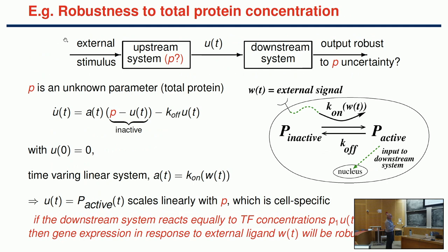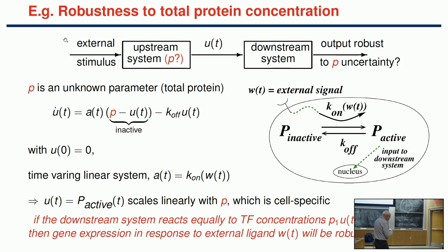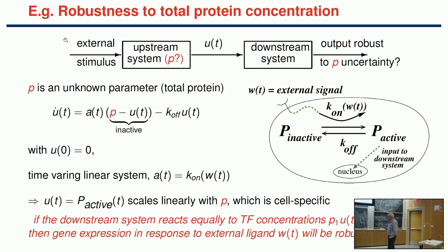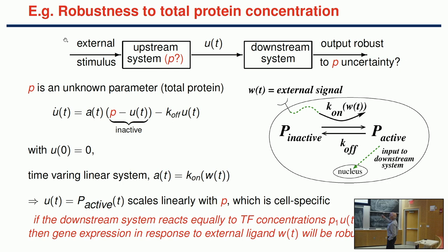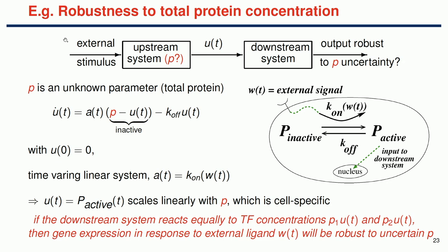Why is this relevant in biology? Suppose you have a system composed of two subsystems. An external stimulus passes through a first system that has parametric uncertainty—say a parameter P scales the signal. If the response of the downstream system is independent of P, then the net result of excitation by this system is the same regardless of P. The system only cares about proportions.